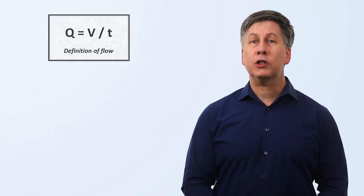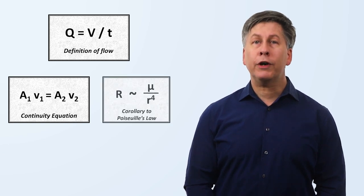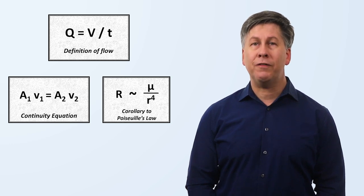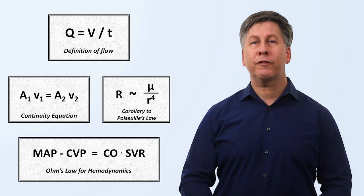In summary, when it comes to hemodynamics, there are four equations to remember. The definition of flow, the continuity equation, the corollary to Poiseuille's law showing the relationship between resistance, viscosity, and the radius of the vessel, and the hemodynamics version of Ohm's law for fluids.